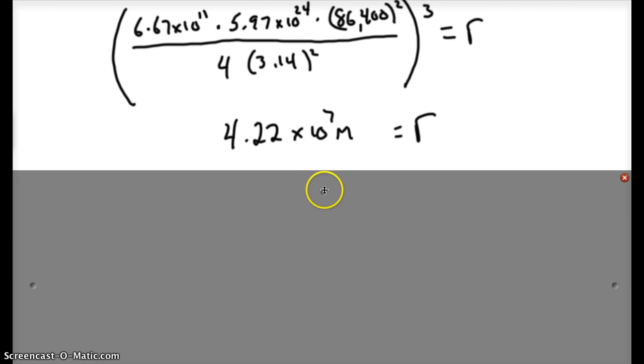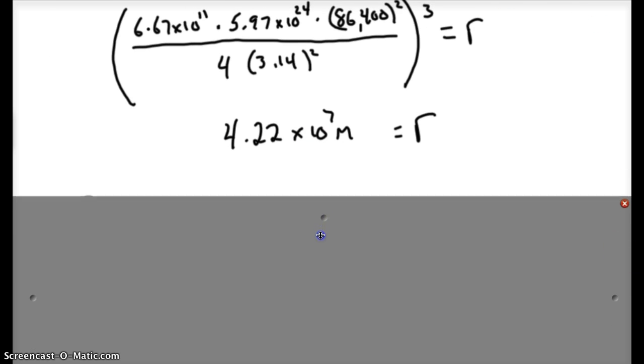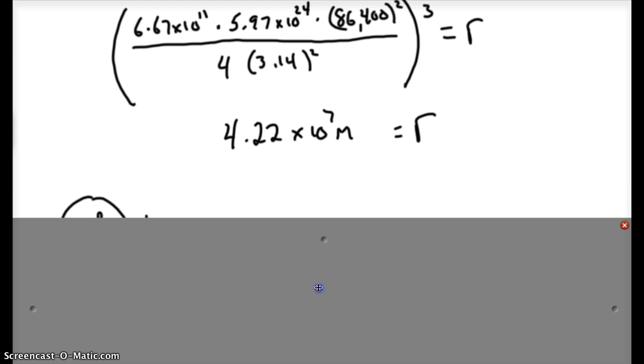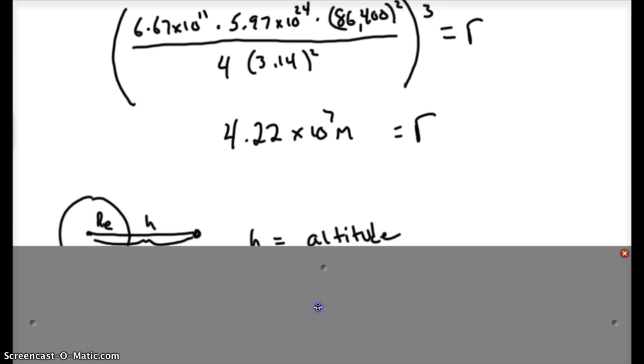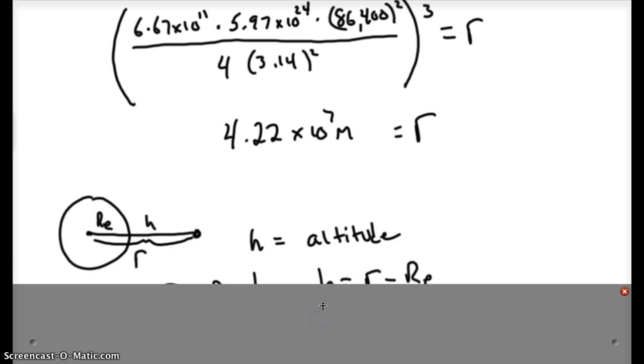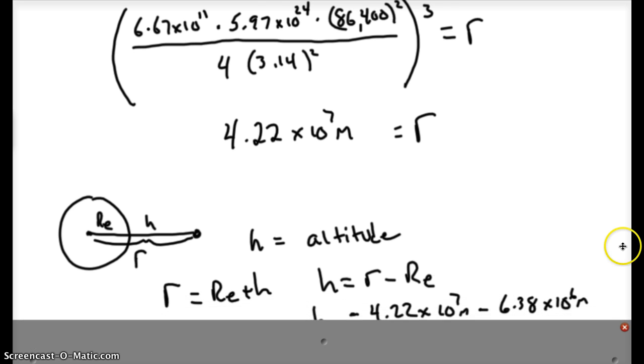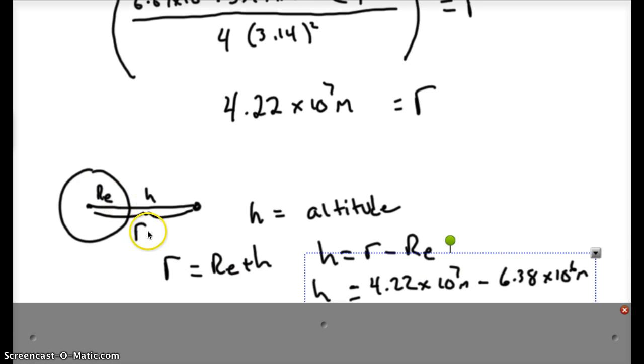Now, a lot of times the problem might ask for the altitude above the Earth's surface. So if you think this through, that whole distance from the center of the Earth to the altitude h above the Earth's surface can be expressed in terms of that distance you just calculated. That distance is the radius of the Earth plus the height above the surface.